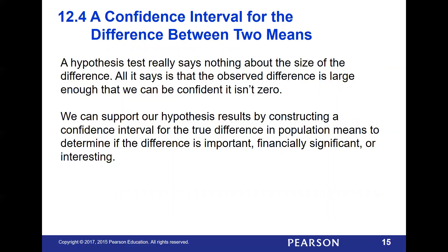Going back to hypothesis testing: the hypothesis test doesn't tell us anything about the size of the difference — all it says is that the difference we have is large enough that it's not zero. We can say the difference is zero or it is not zero, but we're not saying anything about how far from zero it is. We support the hypothesis results by putting together a confidence interval for the true difference in population means to determine if that difference is important, significant, or interesting to us.